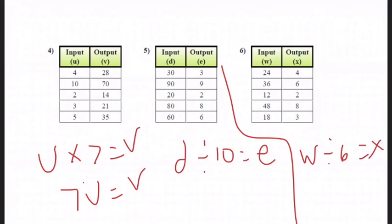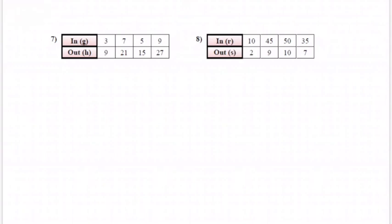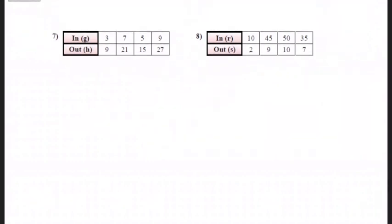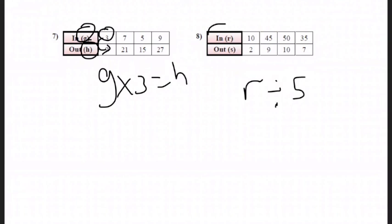All right, next couple. All right, pause it when you have it, when you're ready, and then hit play when you have the answers. Okay, next one is g times 3 equals h. Because you have g here, you're timesing this number by 3 to get to the output, which is h. So number 8 will be r divided by 5, so this is your input to your output, equals s.